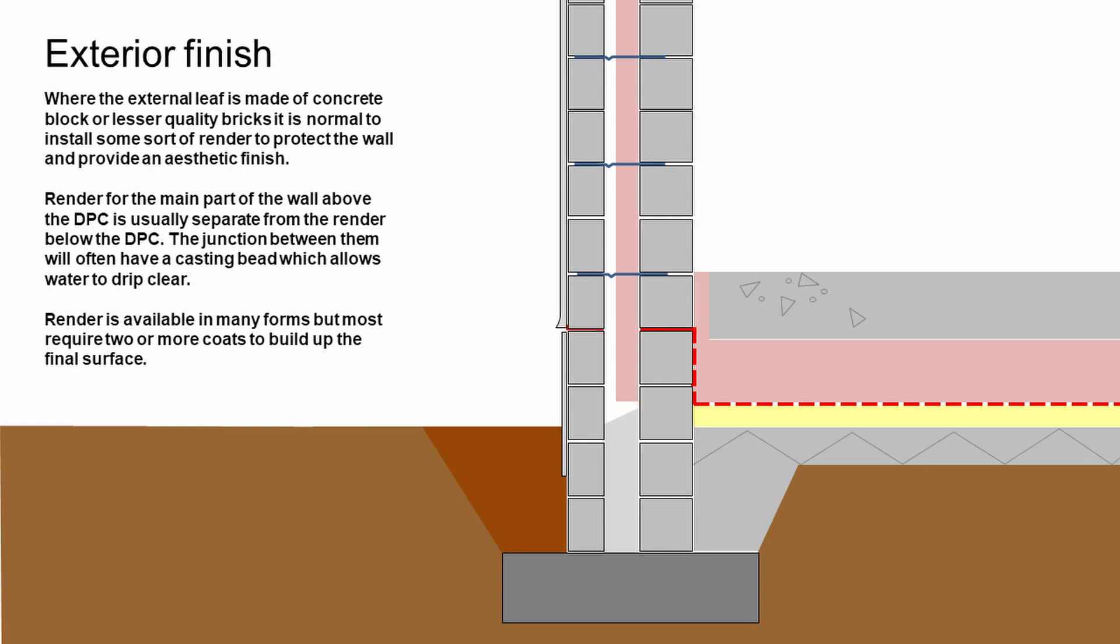It's very rare that we would build a block work building and look at it from the outside and see all the blocks. Usually we're trying to install something that gives us an aesthetic finish, and this is normally some form of render or harling or dry dash or whatever you want to call it. It's pretty much the same stuff.